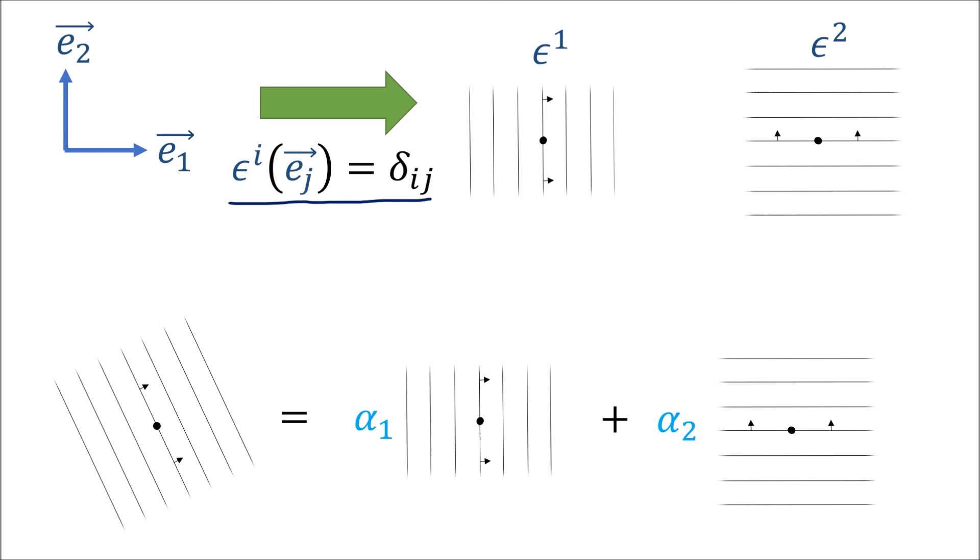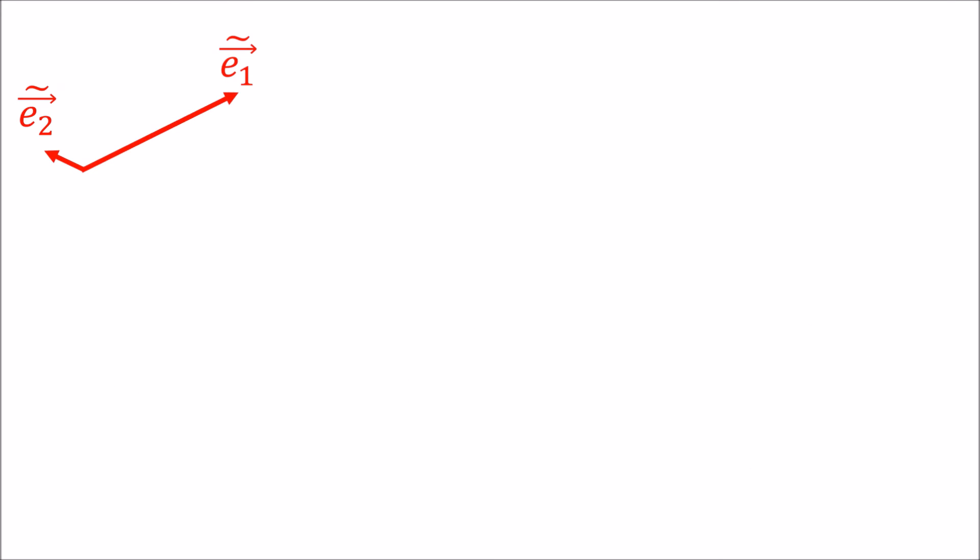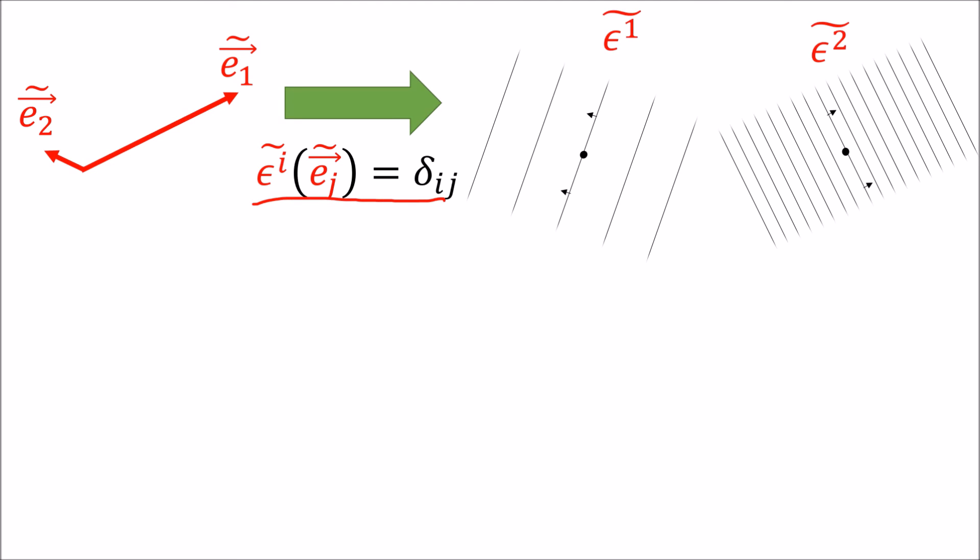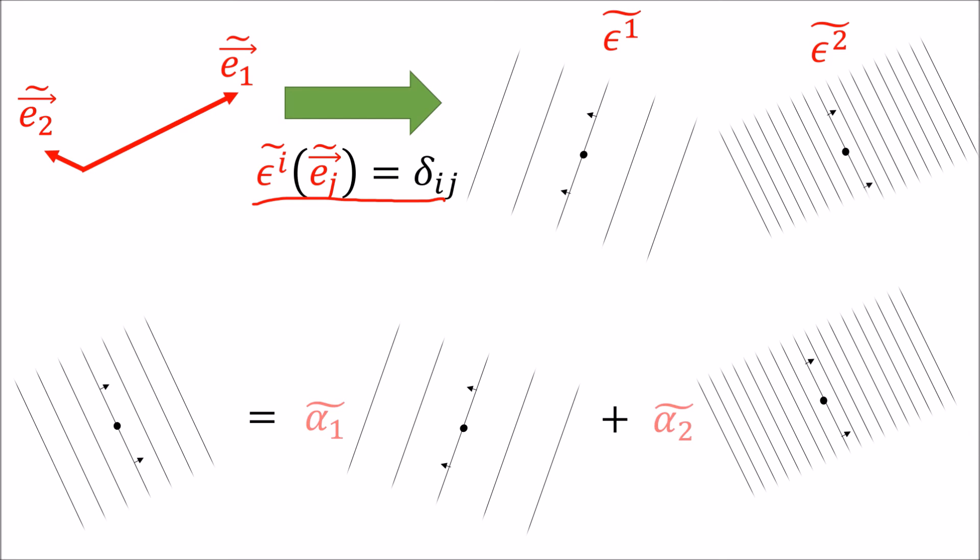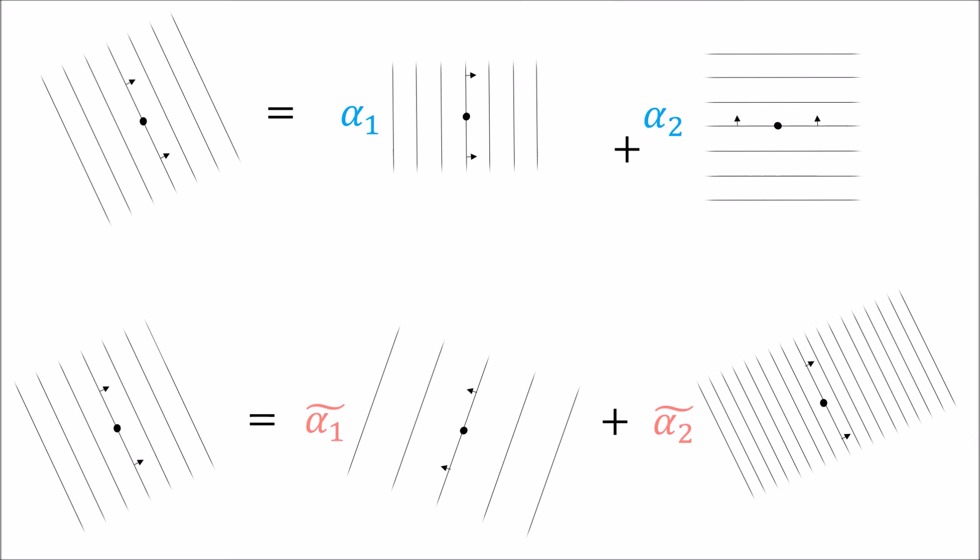Remember these epsilons aren't the only basis we could use to express alpha. We could use any basis that we wanted. Alternatively we could start with this vector basis and then using this rule we can define another dual basis which are the epsilon tildes. We could also express any covector as a linear combination of the epsilon tildes. There are multiple bases that we can use to express a covector. Up here we have the epsilons and down here we have the epsilon tildes.